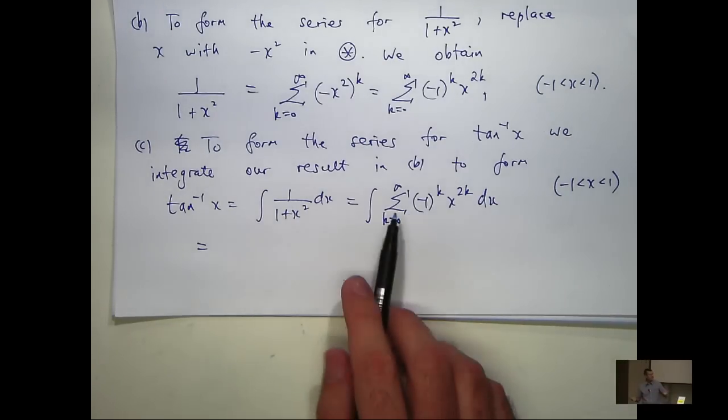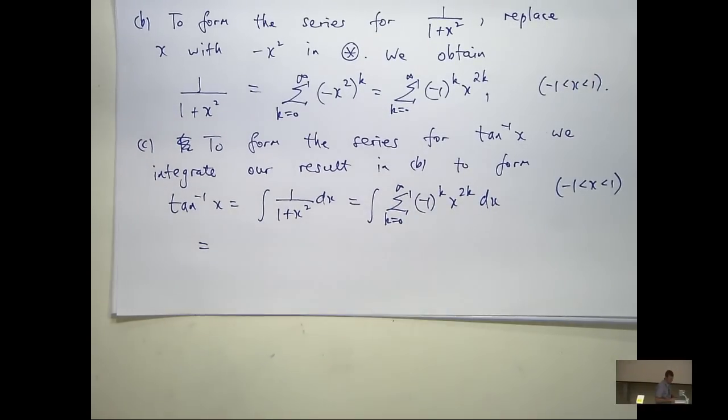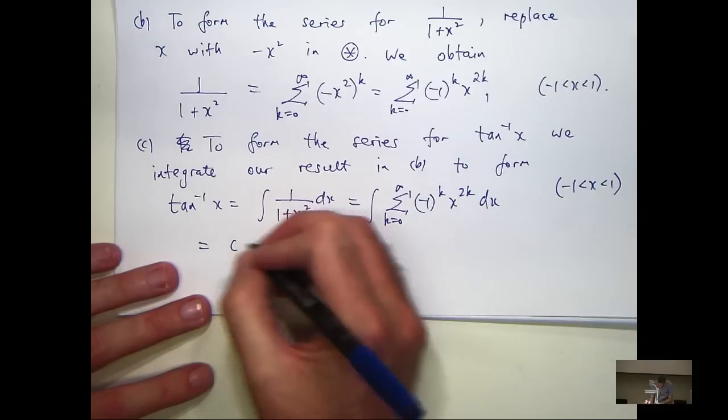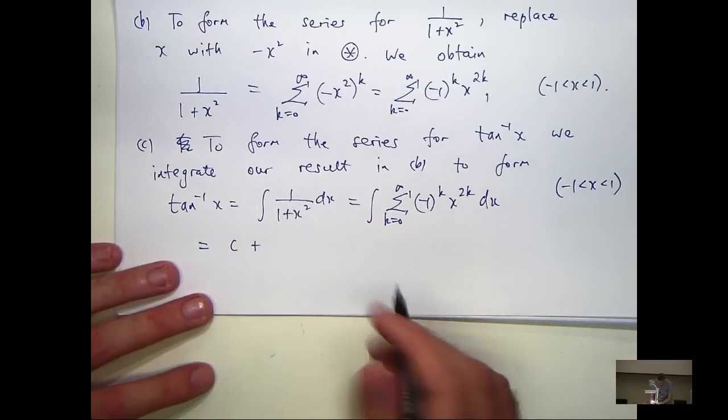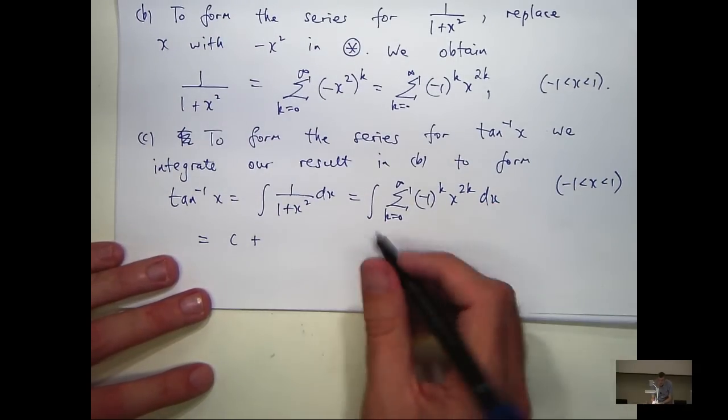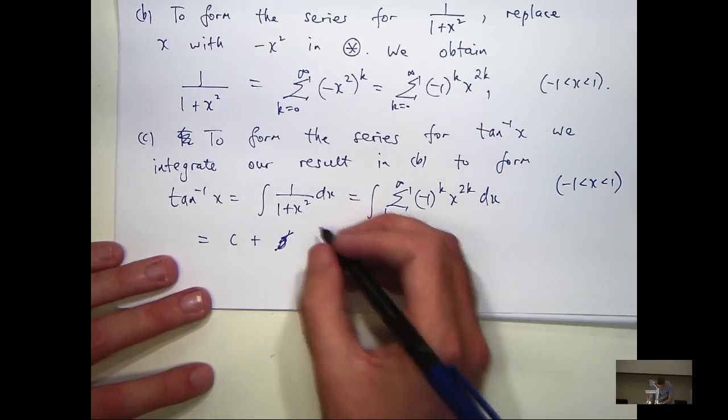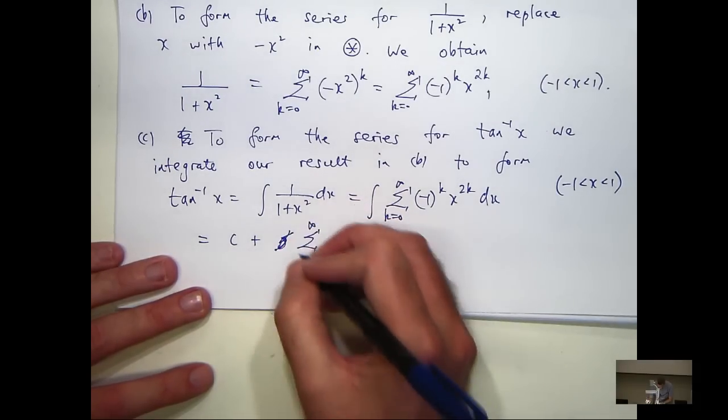Now, you can, if you want to, expand the bracket here and just write out some of the terms, integrate them. I'm not going to do that. Now the first thing, I'm going to put in my constant of integration. And then when I integrate each of these terms, I'm going to get something like this.